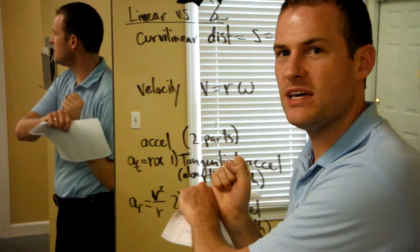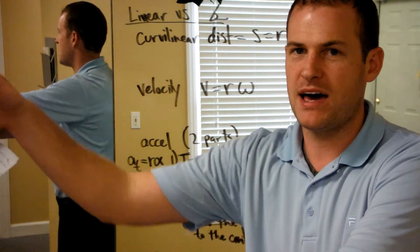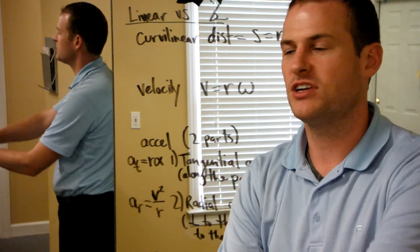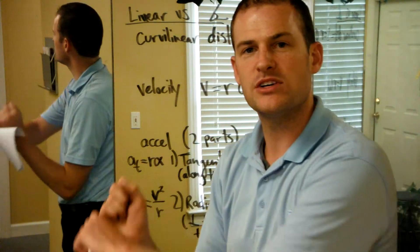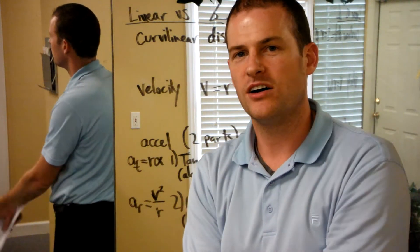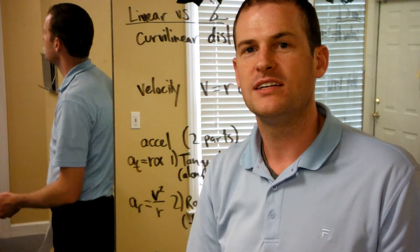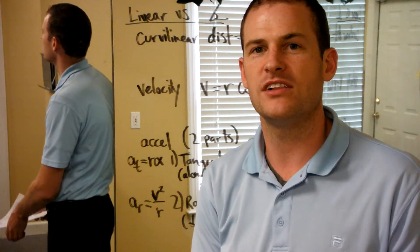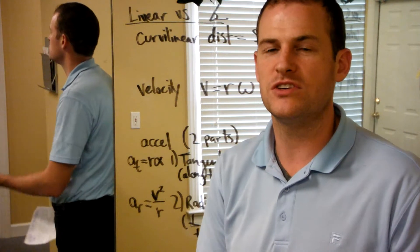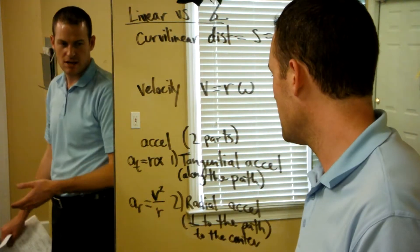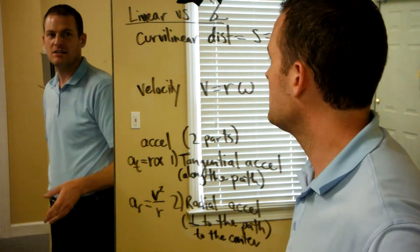In a baseball bat, this would be the acceleration of the tip of the bat along the path, along the curvilinear motion, versus the radial acceleration would be the acceleration towards the hands, towards the body. A golf club would be the same thing. You'd have tangential acceleration, the tangent acceleration of the head of the club, versus the radial acceleration of the shaft towards the body, in order to maintain a smooth motion. This is important to understand.